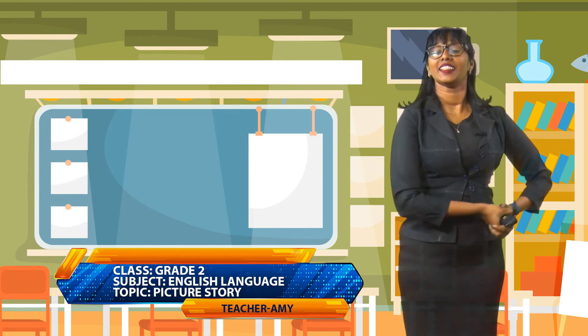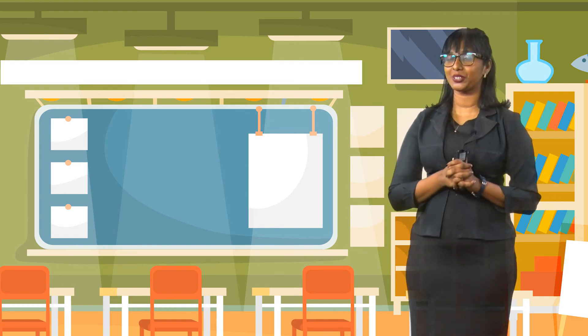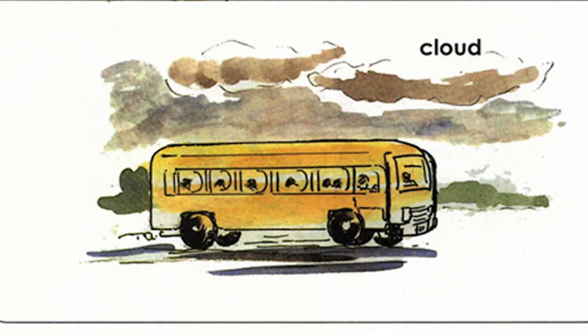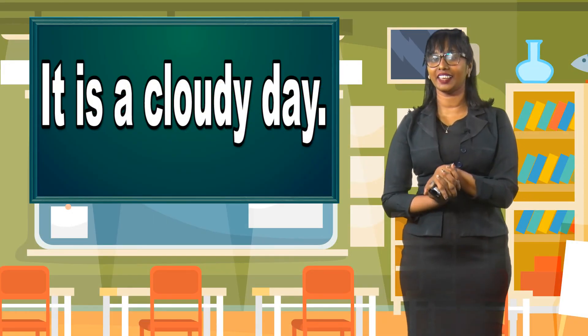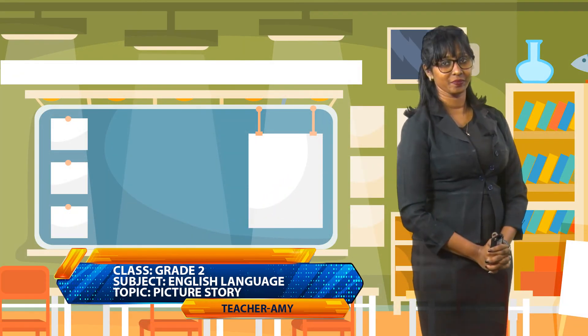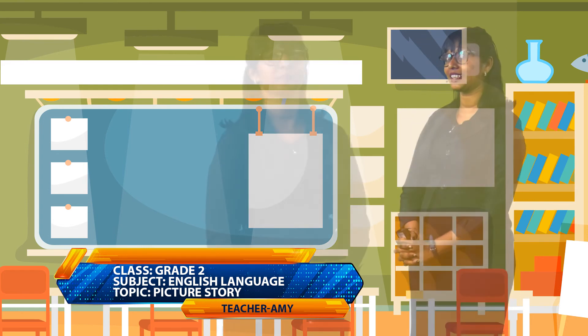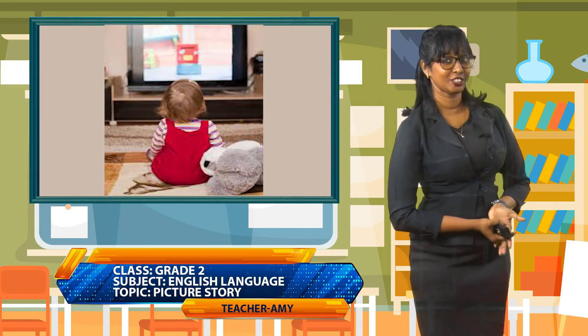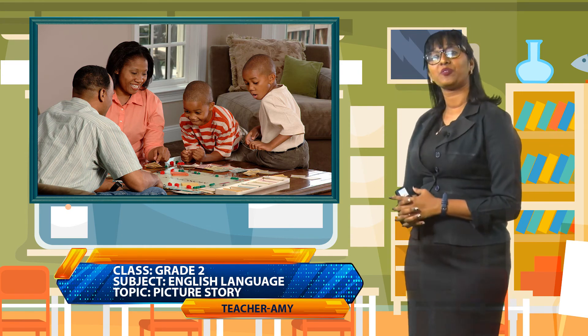Let's take a look now at picture number two. In this picture, we can see it is a cloudy day. There are dark clouds around. Whenever you can see the clouds looking gray and even black, it is a cloudy day. Do you like cloudy days? Some of us love cloudy days because on those days we can stay indoors, look at television, and play board games with our families. So cloudy days can be very fun too.